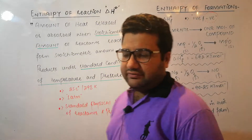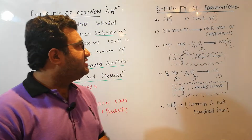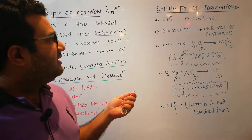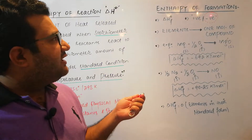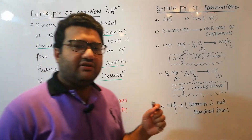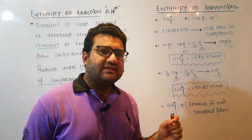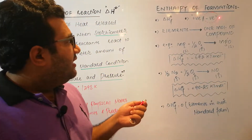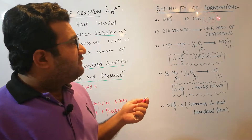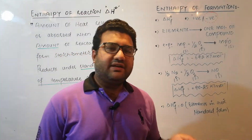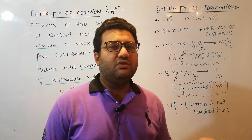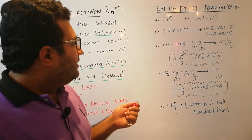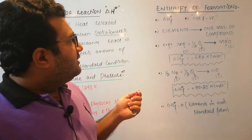The enthalpy of formation is shown with the symbol ΔH°f, where F is for formation. It may be positive or negative, but always keep in mind that in most cases the enthalpy of formation is negative. All those compounds for which the enthalpy of formation is negative are usually stable, and those for which the enthalpy of formation is positive are unstable.